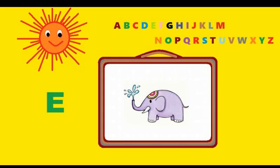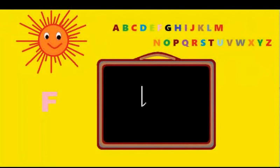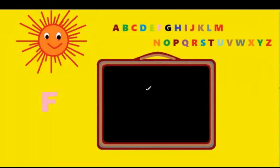Next letter is F. You have to come down the street, across the street, and again across the street halfway. Standing line, sleeping line, again a small sleeping line. That's F. F is for fish.